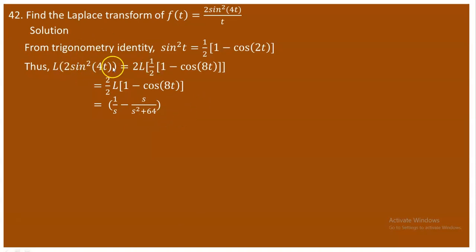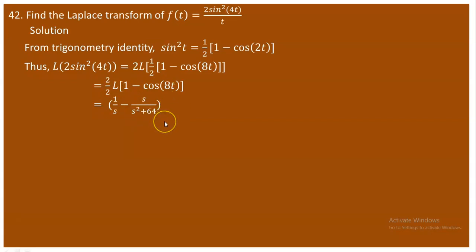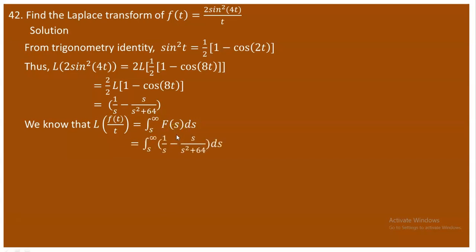The Laplace of the numerator is now obtained. Applying the division-by-t property — L{f(t)/t} = integral from s to infinity of F(s) ds — we set up the integral from s to infinity of [1/s - s/(s² + 64)] ds.